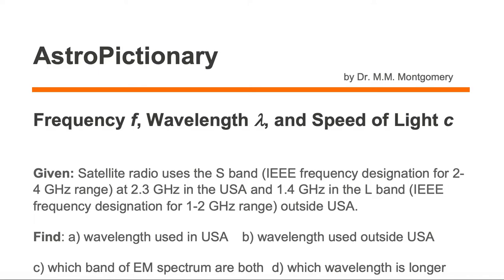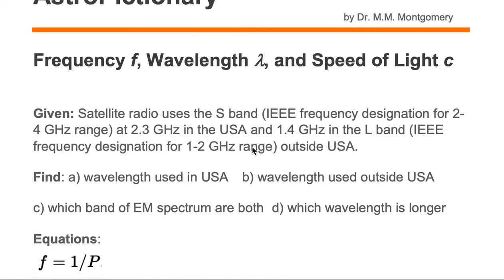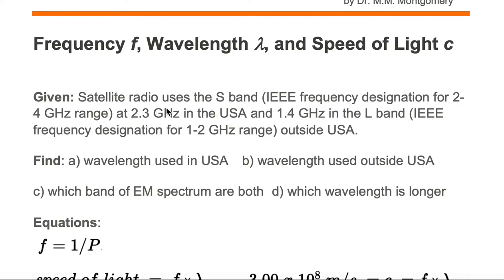In this video, we're going to go through frequency f, wavelength lambda, and speed of light c. For our example, satellite radio uses the S-band, which is the IEEE frequency designation for the 2 to 4 gigahertz range. Satellite radio uses this S-band at 2.3 gigahertz in the United States, and uses the L-band at 1.4 gigahertz outside the USA, where the L-band is the IEEE frequency designation for 1 to 2 gigahertz.